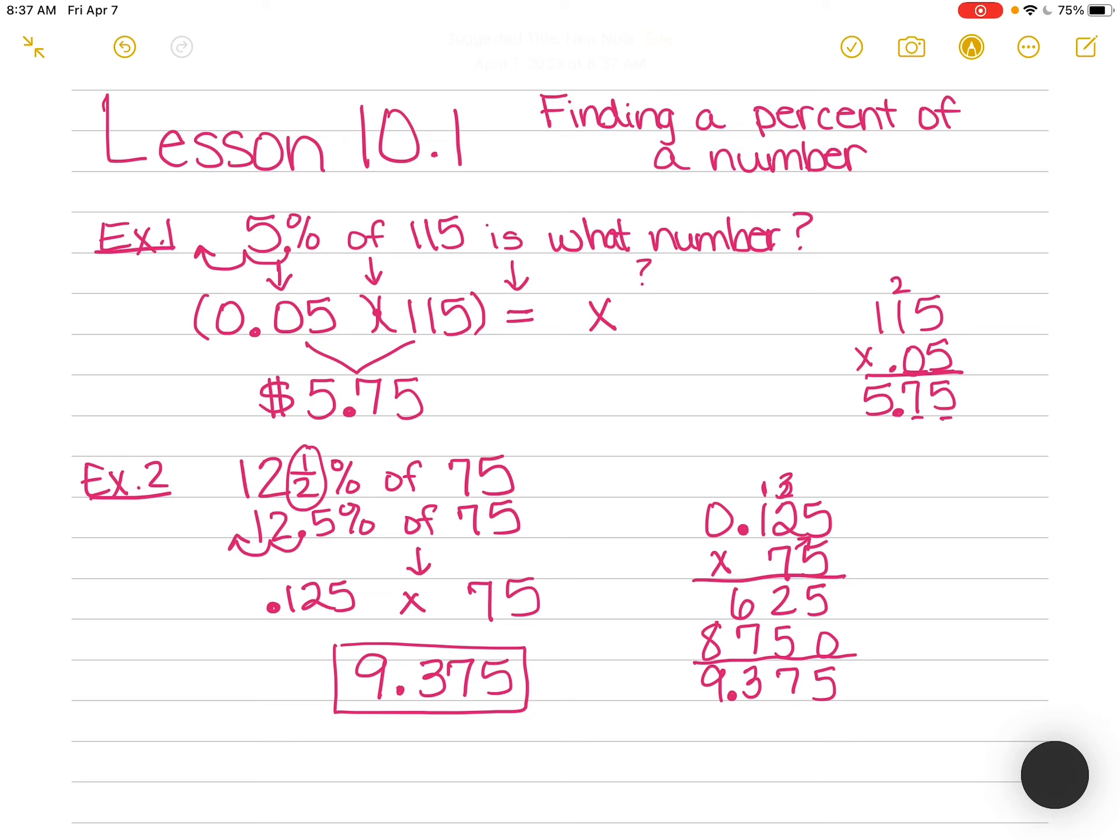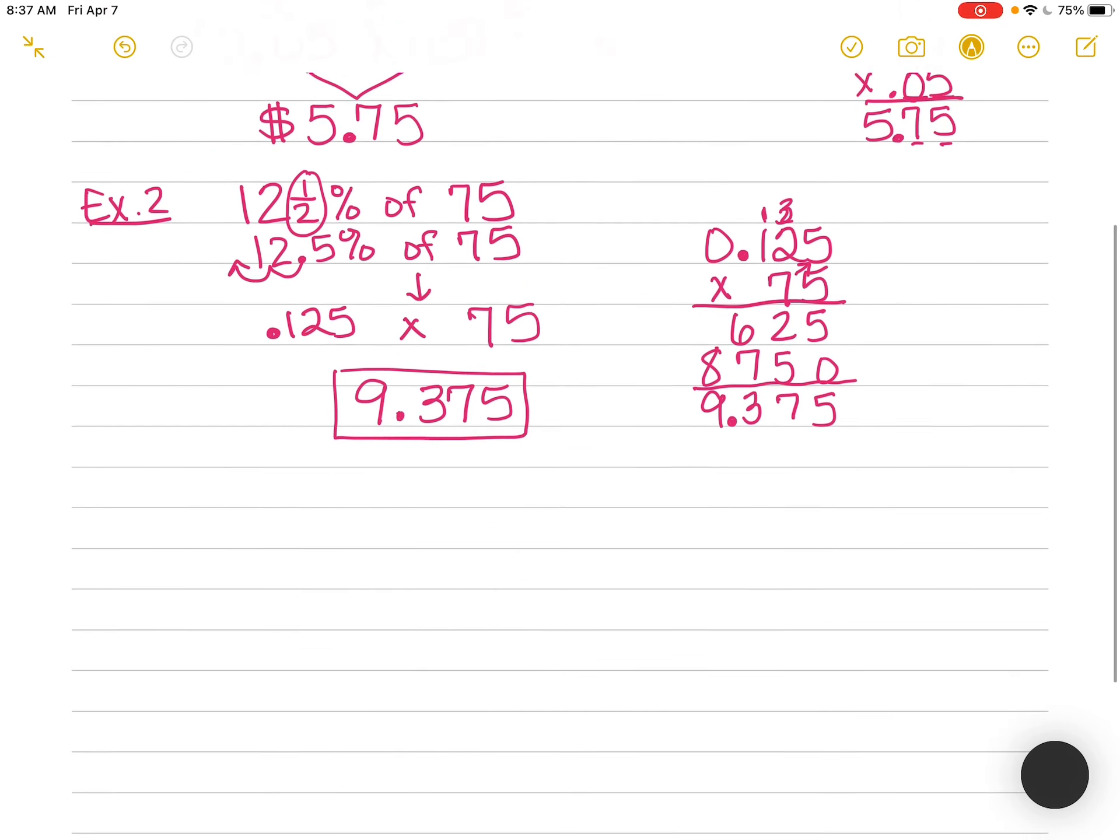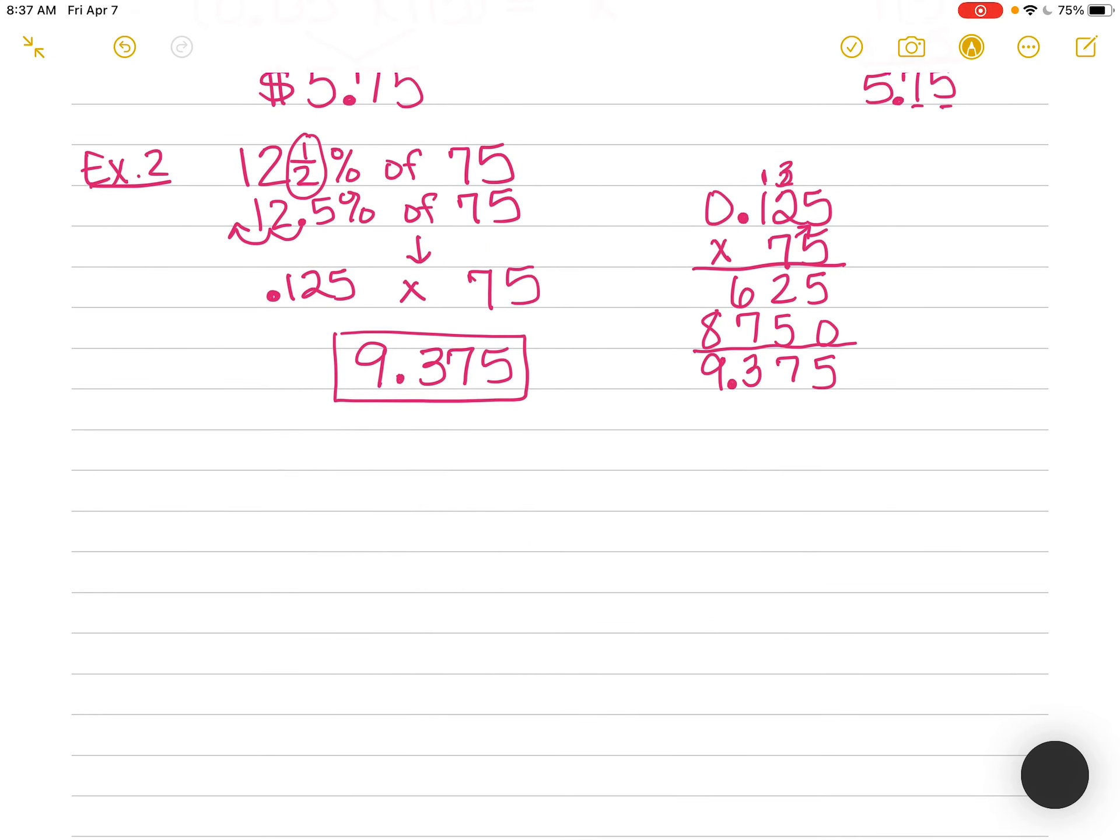So basically, when you're trying to find a percent of a number, you are just multiplying. But you have to make sure that that percent is in decimal form. Last example, I'm going to show you another way besides this multiplication that kind of helps with our lesson tomorrow, finding a percent of a number using a proportion.